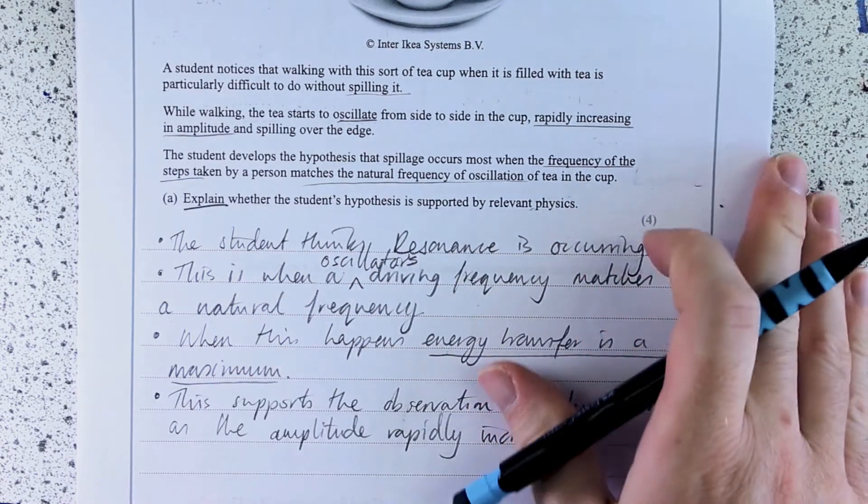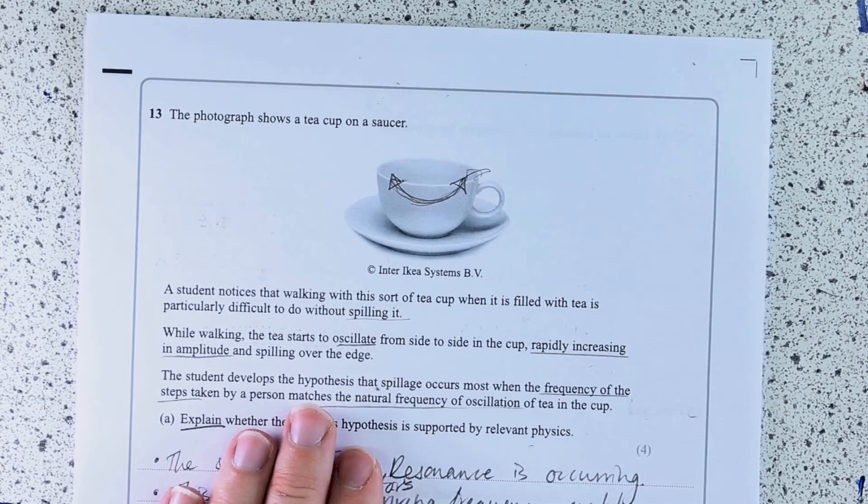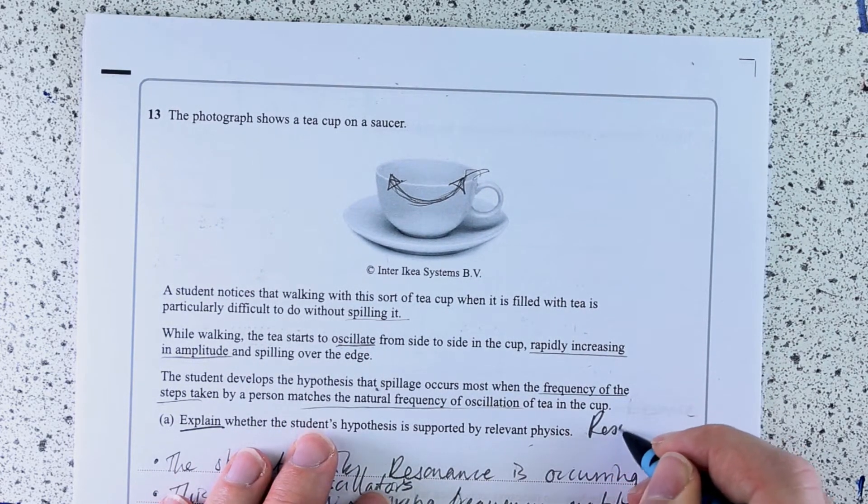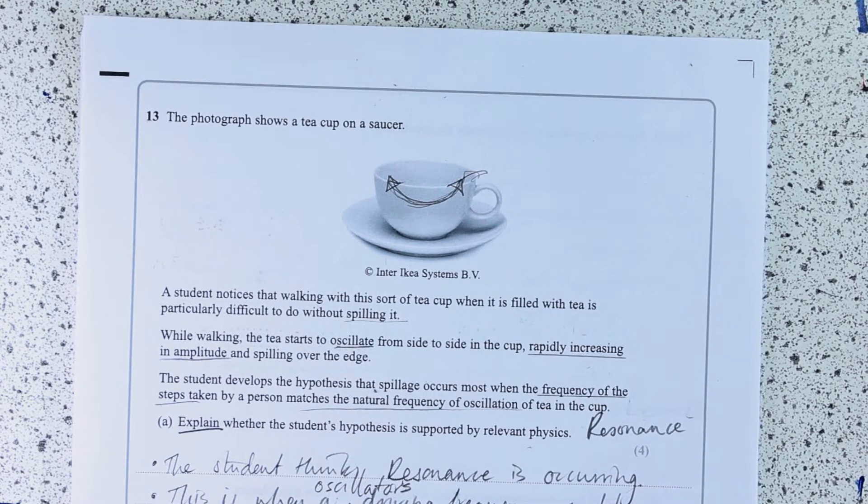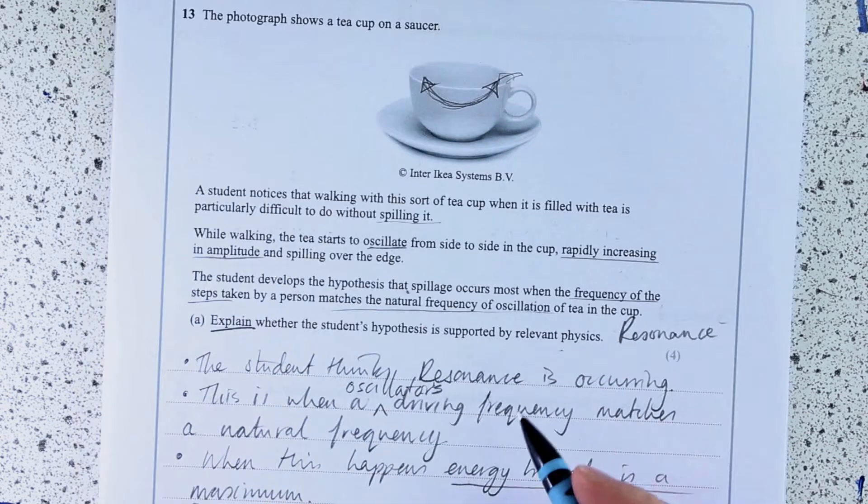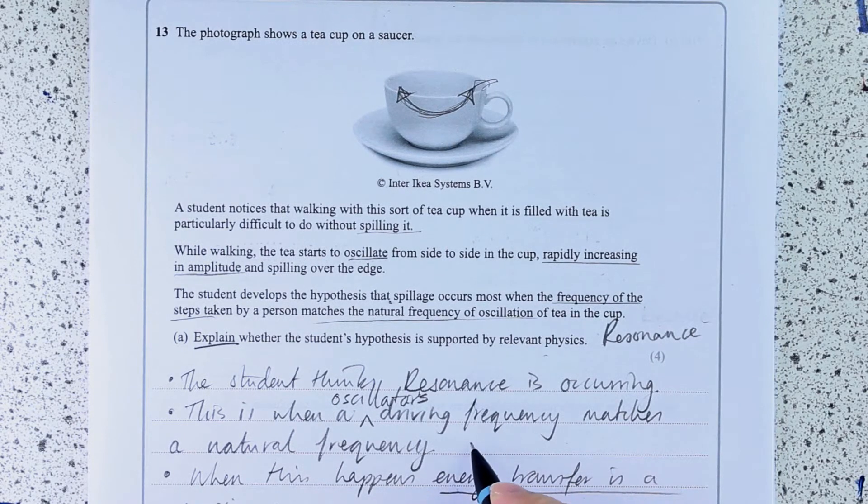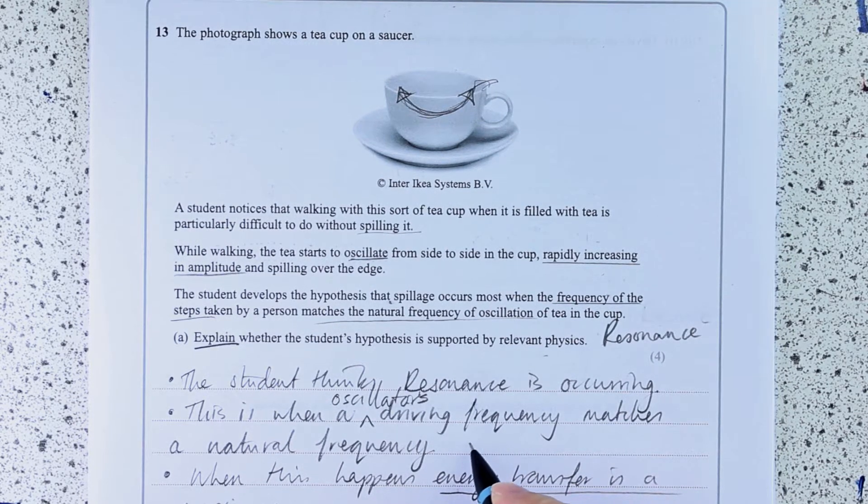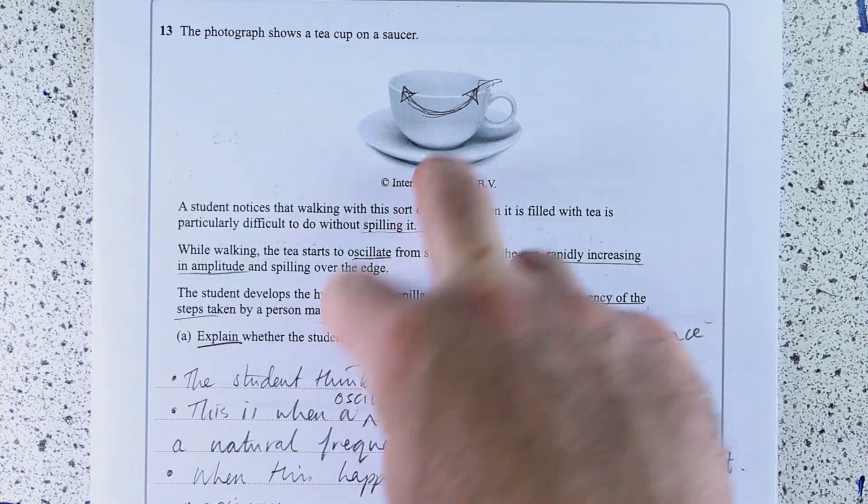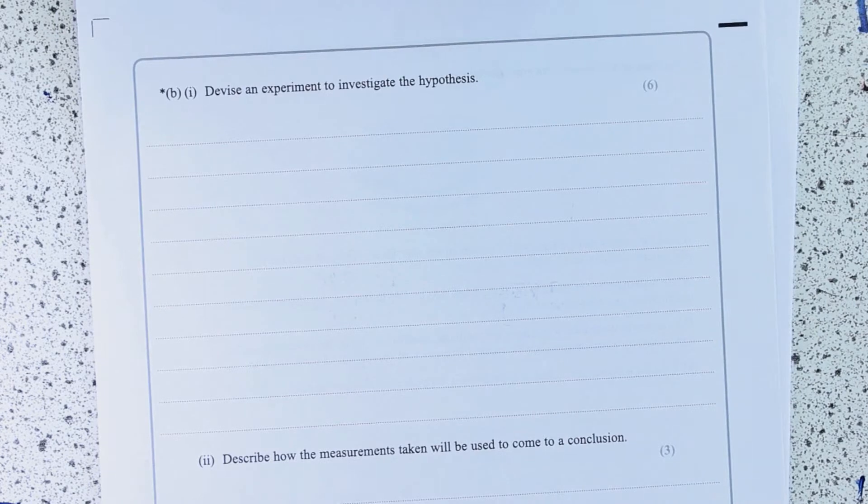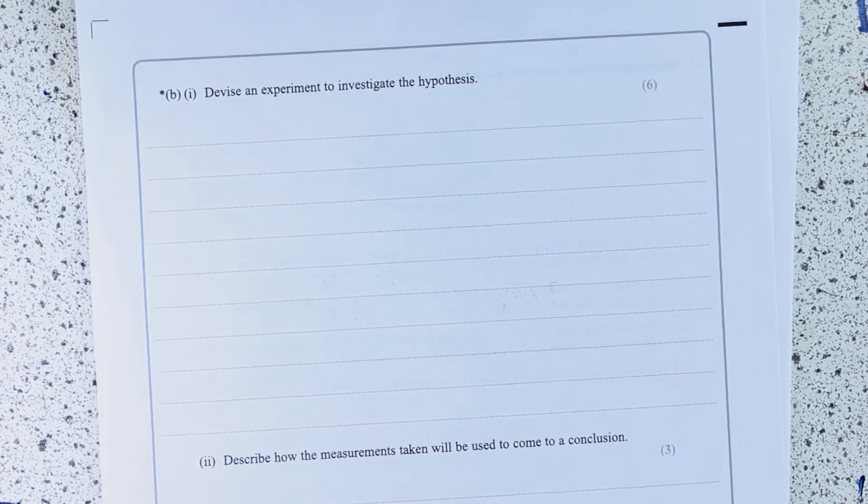So four marks. Those are the four marks there. Really, that one was recognize resonance and apply it to this situation here. I might want to put in here somewhere the driving frequency is the person's gait.